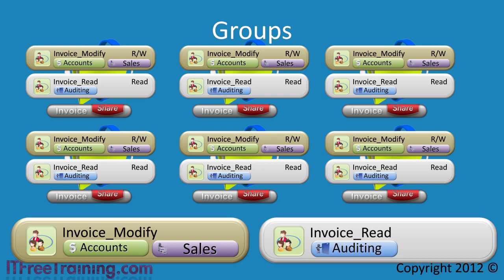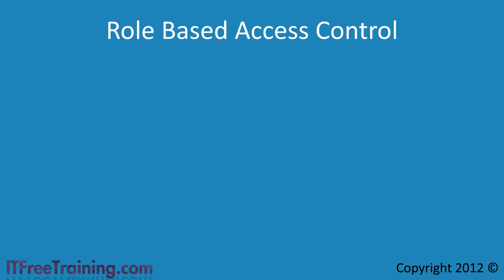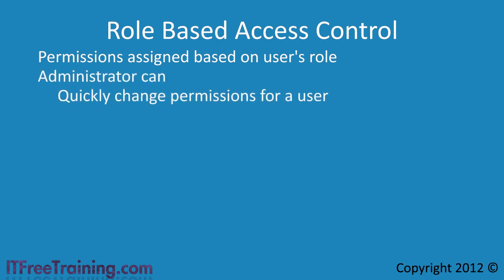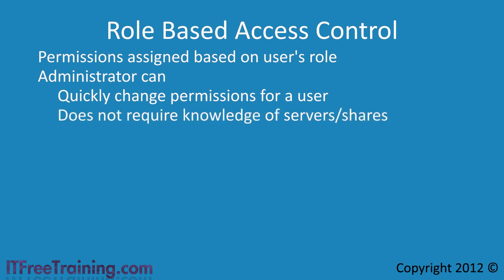You can see that using this approach makes administration easier when changes occur. Also, if someone were to ask who had access to the invoice share, you simply need to look at which users are in the invoice read and invoice modify groups. Configuring access like this is called role-based access control. When using this approach, permissions are granted based on the role the user has in the organization. Users are not assigned permissions directly. A user requires access through their role in the organization. If the user were to change jobs or departments, the roles assigned to that user would change to suit their needs. Using this approach, an administrator can quickly make these changes and does not require knowledge of how the permissions at the lower level are assigned.